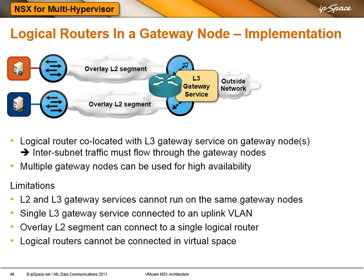The logical router is actually implemented within the gateway node together with the Layer 3 gateway service. That means that in this particular scenario, the traffic between VMs in different segments has to go through the gateway node. You can use multiple gateway nodes for high availability. Remember, you cannot mix Layer 2 and Layer 3 services on the same gateway node — you have to have nodes dedicated to Layer 2 and nodes dedicated to Layer 3 service. A single Layer 3 gateway service can connect to a single uplink VLAN, and you cannot have more than one logical router on an overlay Layer 2 segment, nor connect two logical routers in the virtual space. Effectively, you can build a tree that has one branch going into the physical network.